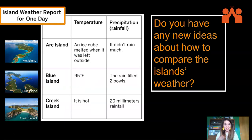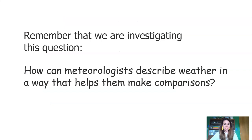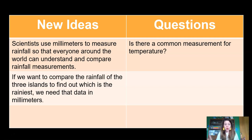Thinking back to those three islands from the email earlier, do you have any new ideas about how to compare the islands' weather? Remember we're investigating the question: how can meteorologists describe weather in a way that helps them make comparisons? Here are my new ideas from today: scientists use millimeters to measure rainfall so everyone around the world can understand and compare rainfall measurements. And if we want to compare the rainfall of the three islands to find out which one is the rainiest, we need that data in millimeters.